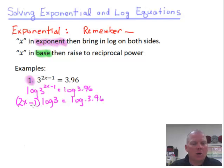Now we're going to expand this left side and we're going to bring that exponent down in front of the log. So it'll be (2x minus 1) times the log of 3 equals log of 3.96. Now we want to get rid of log on the side that our variable x is on.